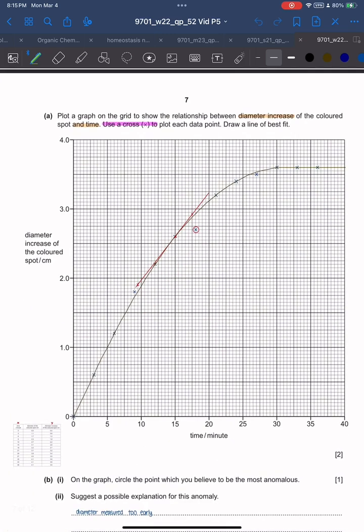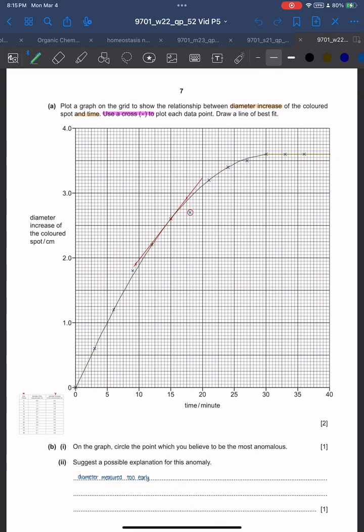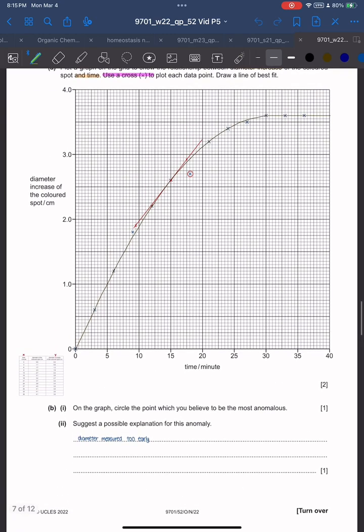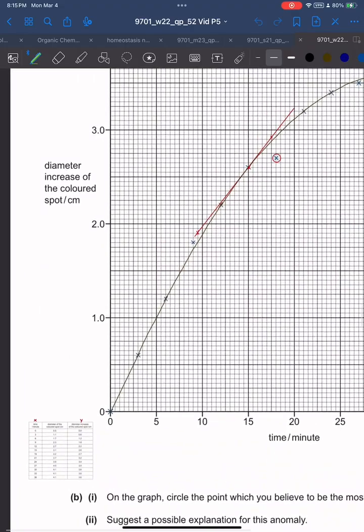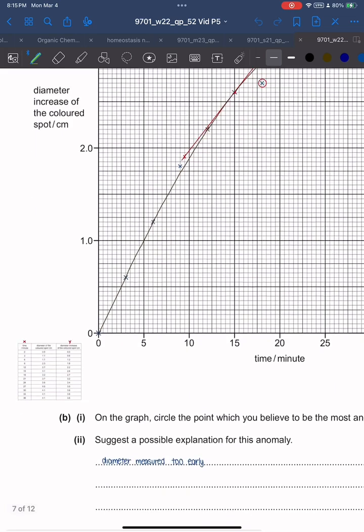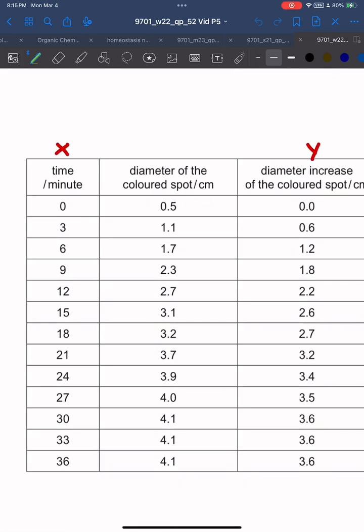Draw a line of best fit. For this one it's actually a curve, and this is the first time I came across a curve of best fit. Hit as many spots as you can. On the graph, circle the point that you believe to be the most anomalous. I've circled this one here - the seventh one at 18 minutes and 2.7 cm.